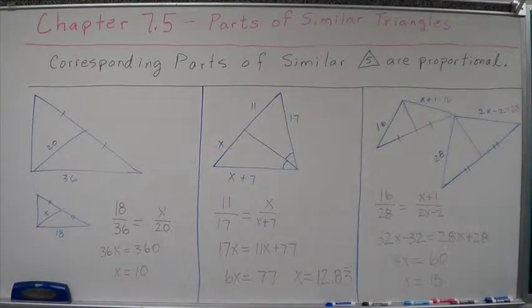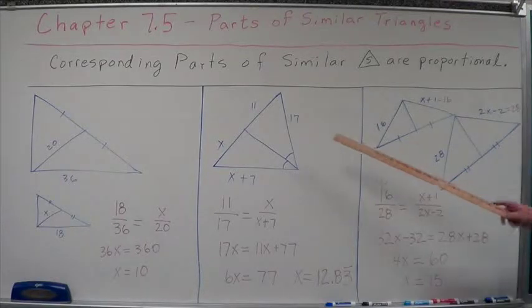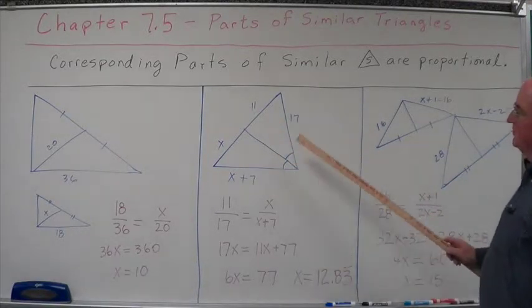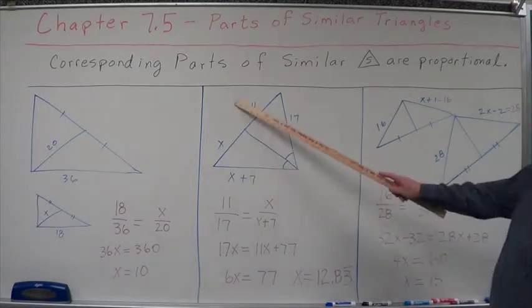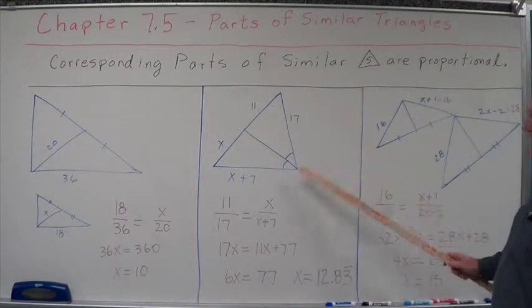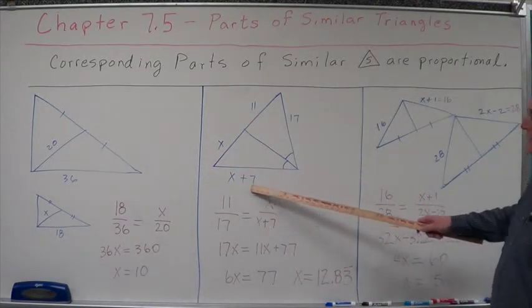And this one's not straightforward. This is getting into that angle bisector thing I was talking to you about, where the angle bisector divides the opposite side into two segments that are proportional to the other two sides.